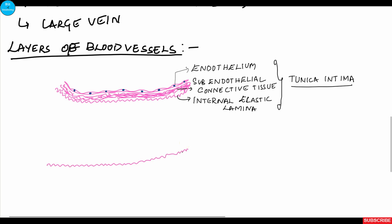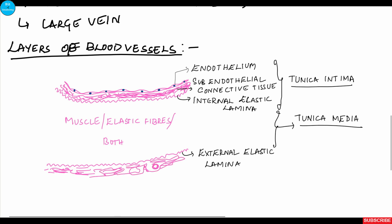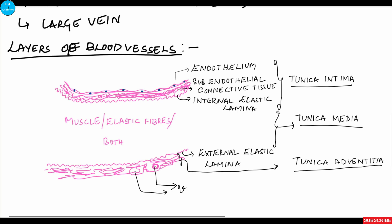Outside the tunica intima there is an external elastic lamina. Between the internal and external elastic lamina lies the tunica media, which contains either smooth muscle, elastic fibers, or a combination of both. Outside the tunica media there is a layer of connective tissue containing blood vessels called vasa vasorum; this layer is called the tunica adventitia or tunica externa.